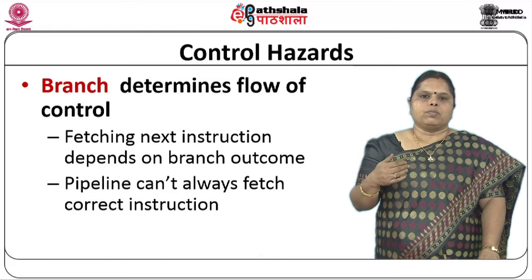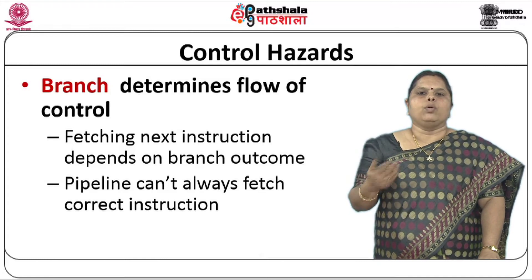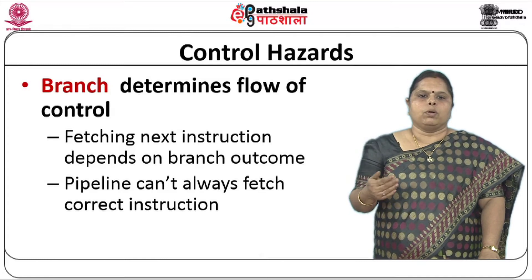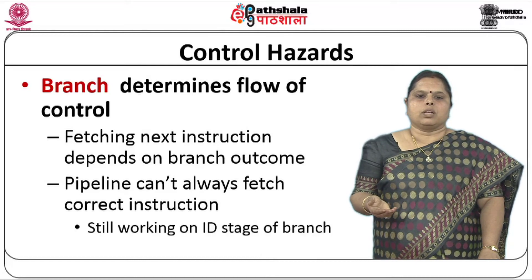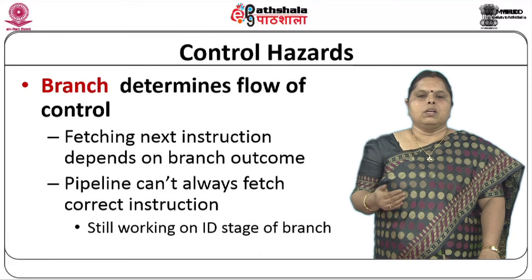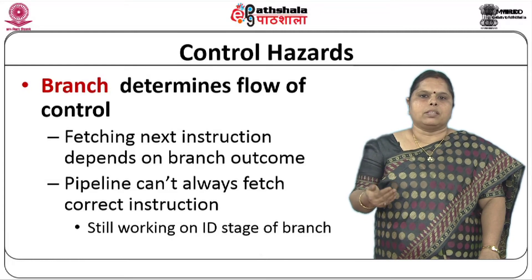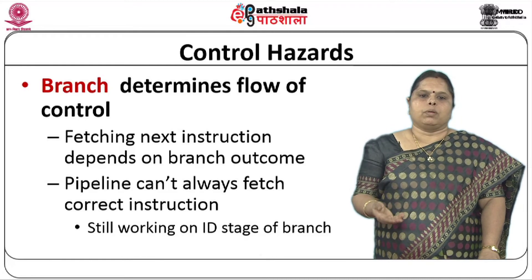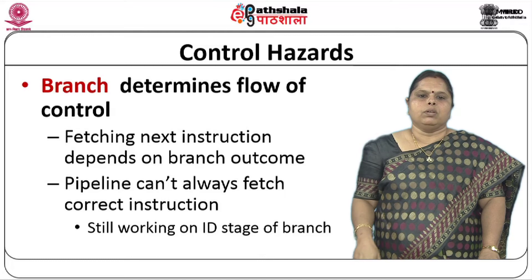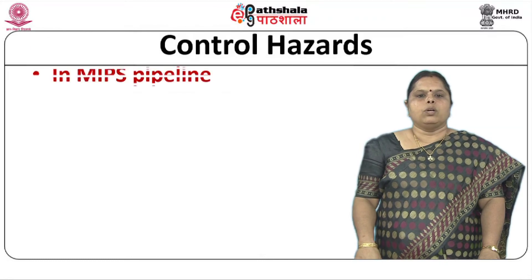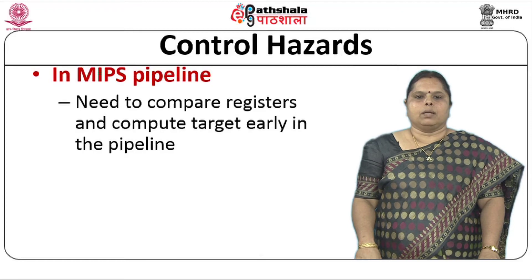In a pipeline, when the next instruction is being decoded, you also have the subsequent instruction being fetched from memory. If you are going to fetch from the sequential address, you have a problem. That gives rise to what are called penalties associated with branch instructions, because the instruction is still in the ID stage of the branch and has not yet produced the branch outcome. Whatever you fetched can be problematic. So, how do we handle control hazards in the MIPS pipeline?